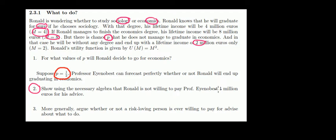Show using algebra that we're not willing to pay 1 million for this advice. Okay, so we have to compare two cases: when we pay for the advice and when we don't pay for the advice. So let's do it.